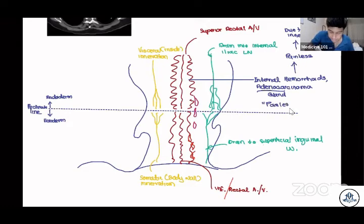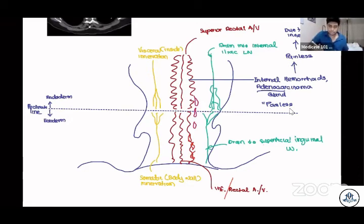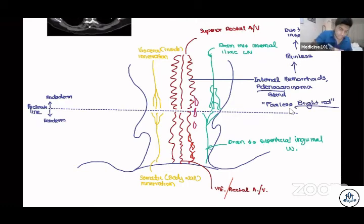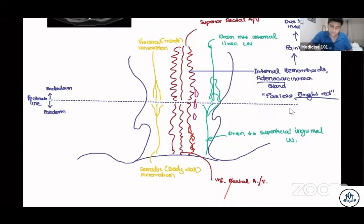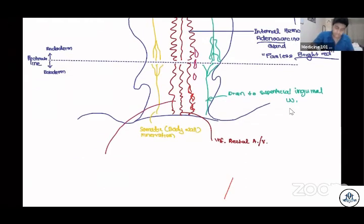Internal hemorrhoids are painless due to visceral innervation. The patient will present with painless bleeding. The color of the bleeding will be bright red, not black tarry stool, because there are no enzymes in that region to break down the blood — that is the clinical correlation you need to know.